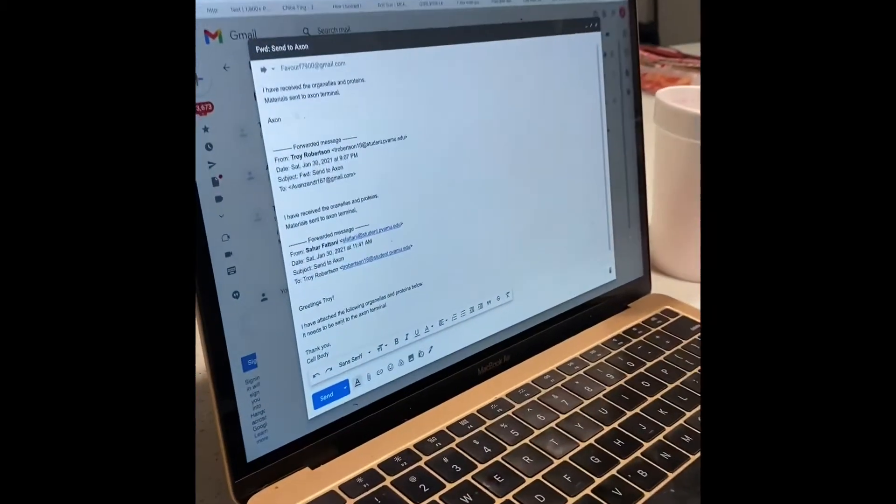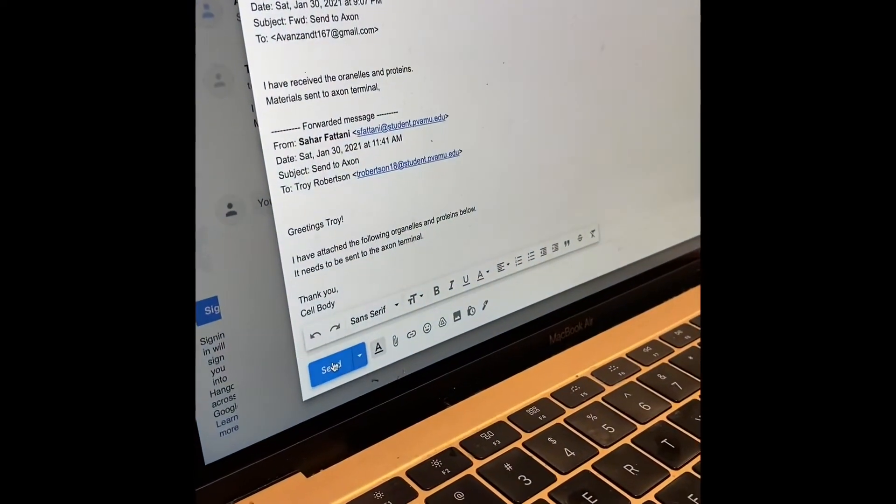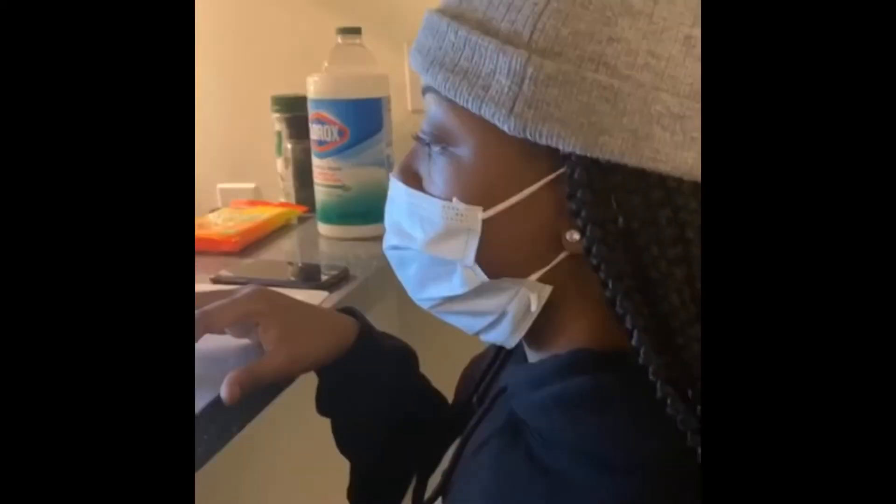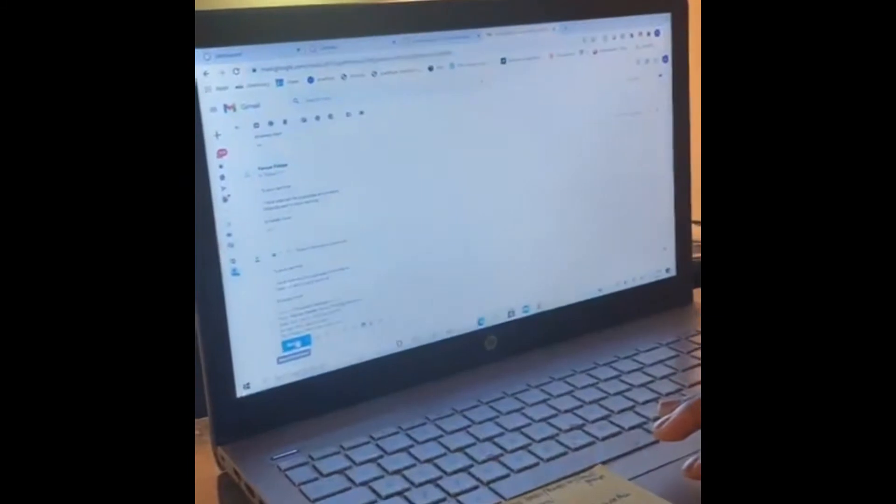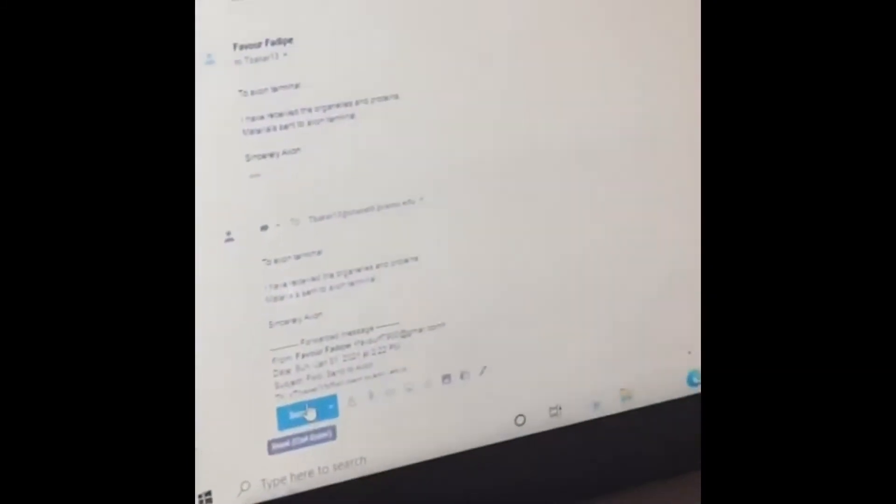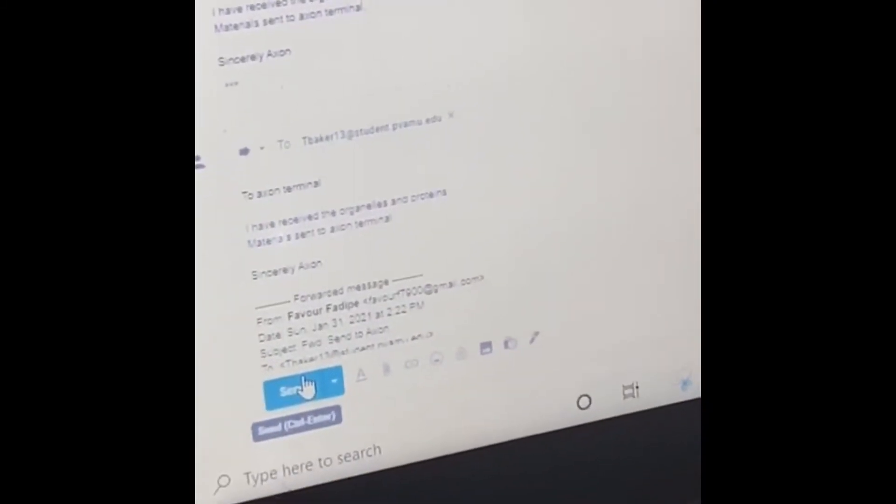The axon lacks a Golgi apparatus and a rough endoplasmic reticulum. The lack of their presence aids in the insulation of action potentials, which leads to muscle movement. However, this means that the axon terminal must receive things such as mitochondria, vesicles, and enzymes for neurotransmitter synthesis from the cell body.